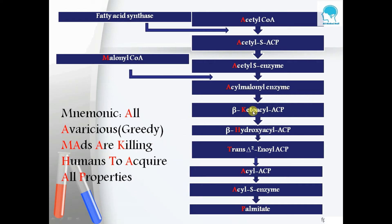K stands for β-keto-acyl-ACP, and H stands for β-hydroxy-acyl-ACP.